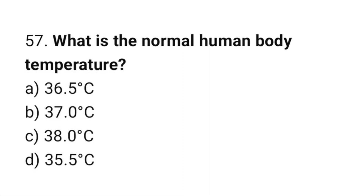Question number 57: What is the normal human body temperature? The correct answer is B: 37.0 degrees Celsius.